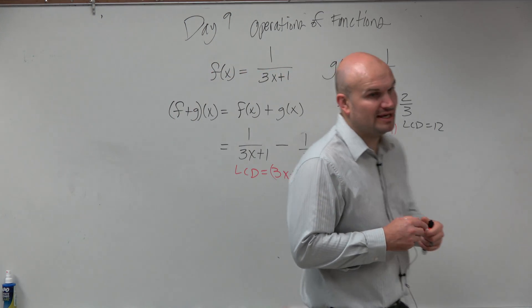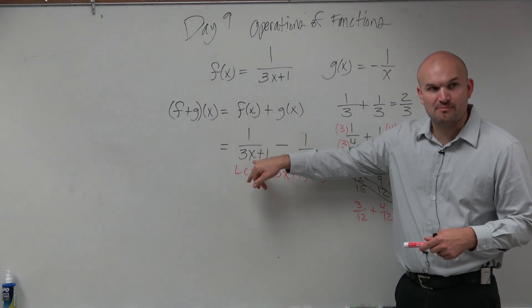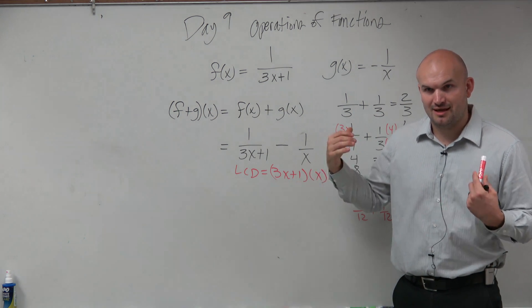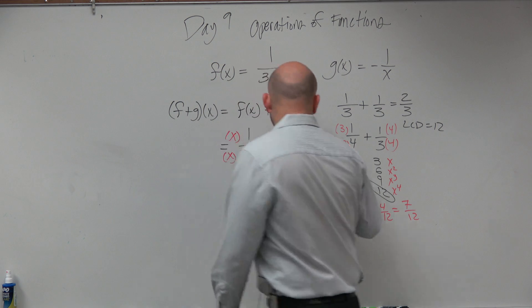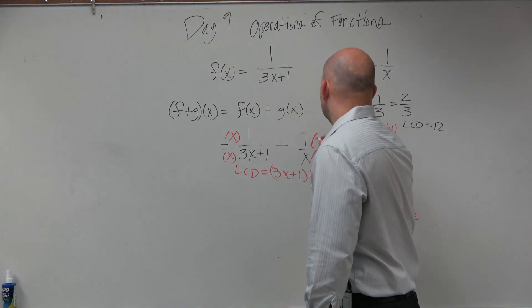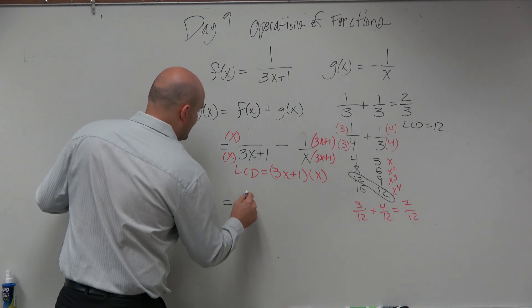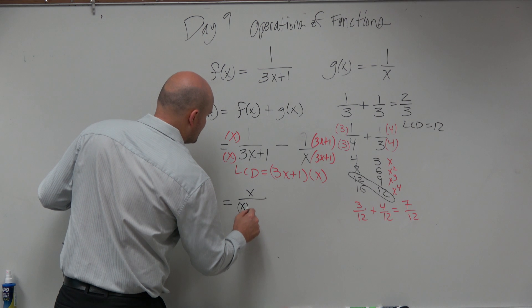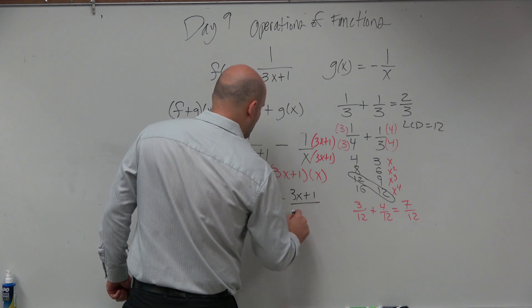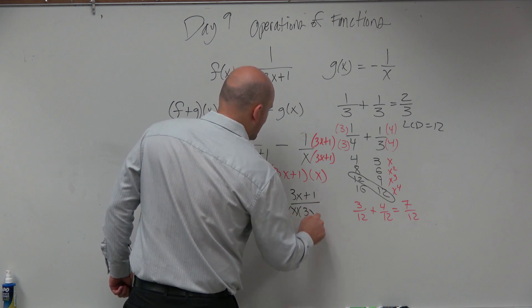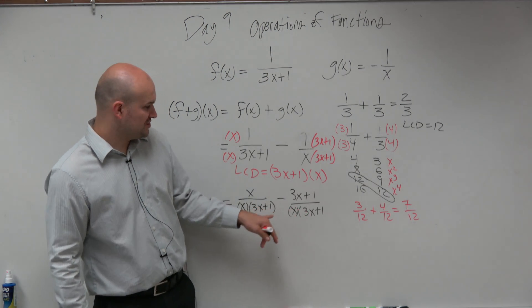So now what we need to do is say, if my LCD is 3x plus 1 times x, what do I need to multiply 3x plus 1 by to get it to be that? Just x. So you multiply by x over x. And then here you need to multiply by 3x plus 1 over 3x plus 1. When we do that, we now have x over x times 3x plus 1 minus 3x plus 1 all over x times 3x plus 1. Can you now see that we have two fractions with common denominators?